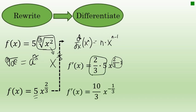2/3 times 5 is 10/3 and 2/3 minus 1 is negative 1/3. We now have a derivative.